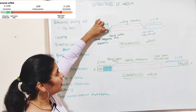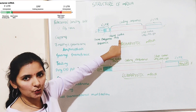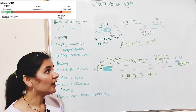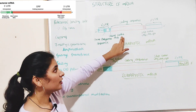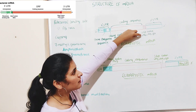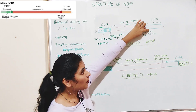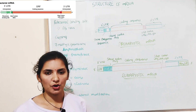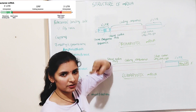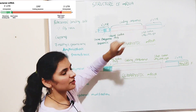Following the 5' UTR region is the coding sequence. The coding sequence starts at a point known as the start codon. The start codon is the AUG codon, and it is this point where translation or protein synthesis begins. The coding sequence ends with a stop codon — stop codons are UAG, UAA, and UGA. As the name indicates, the stop codon is the point where translation ends.